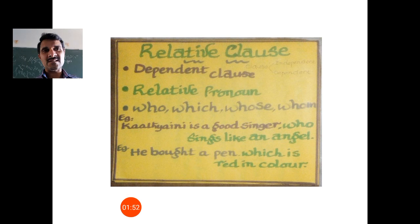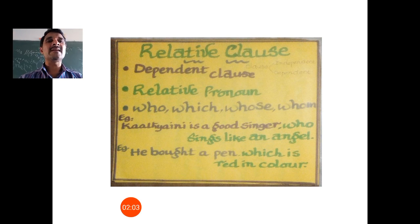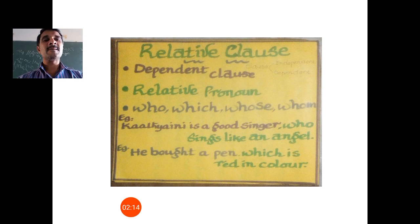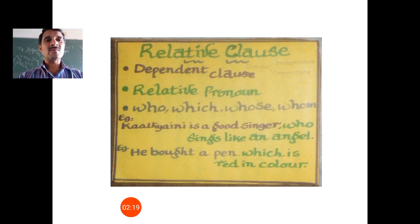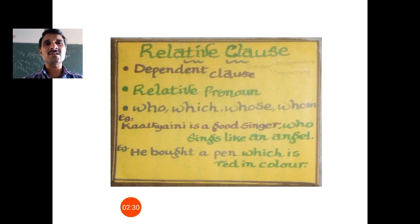As we discussed earlier, clauses are of two types: dependent clause and independent clause. Likewise, a relative clause is also known as a dependent clause, which means it doesn't have independent meaning. Unless it depends on an independent clause, it doesn't have complete sense. A relative clause combines with relative pronouns: who, which, whose, and whom.